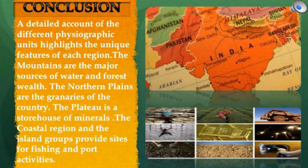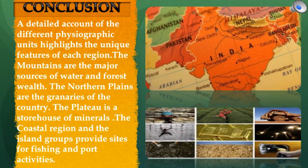To conclude the chapter: a detailed account of the different physiographic units highlights the unique features of each region. The mountains are the major sources of water and forest wealth. The northern plains are the granaries of the country. The plateau is a storehouse of minerals. The coastal regions and island groups provide sites for fishing and other activities.